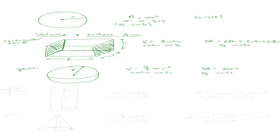Let's move on to a cylinder. A cylinder has a top, a bottom, and a body. The radius goes from the center of the base to the edge, and the height goes from top to bottom. The volume is π r squared h, in cubic units. The surface area is 2π r h plus 2π r squared, in square units.